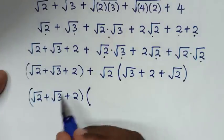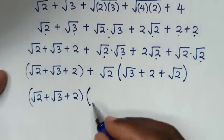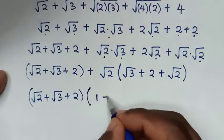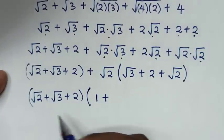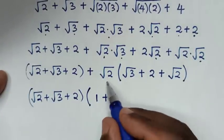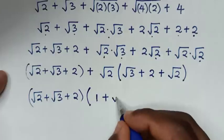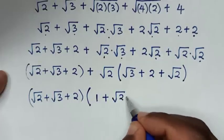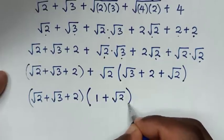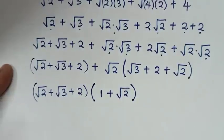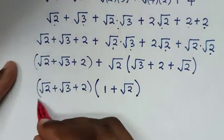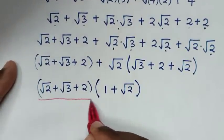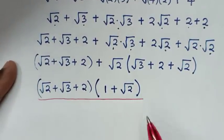Dividing, this gives 1 plus square root of 2 inside the bracket. This is the simplified value in the denominator.